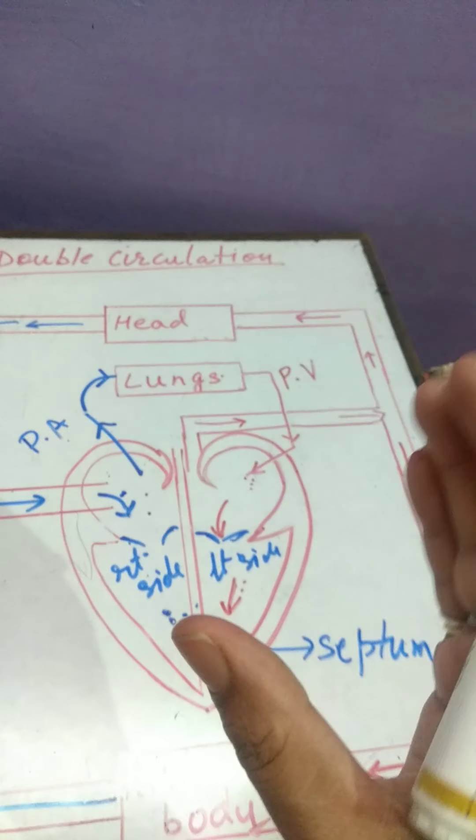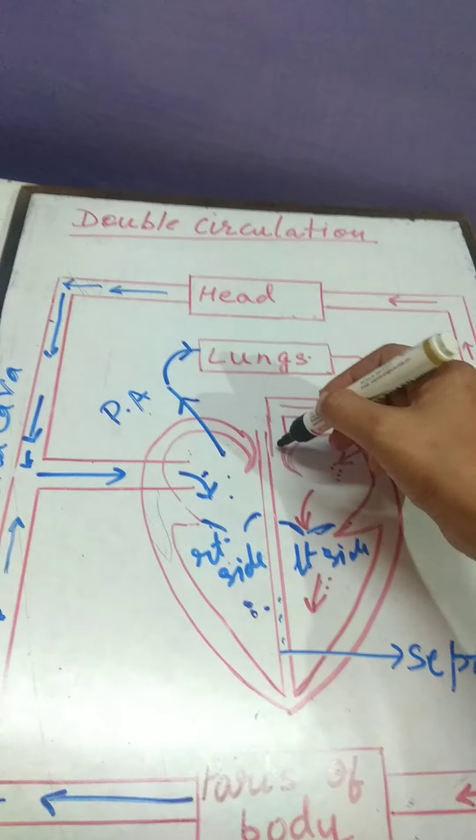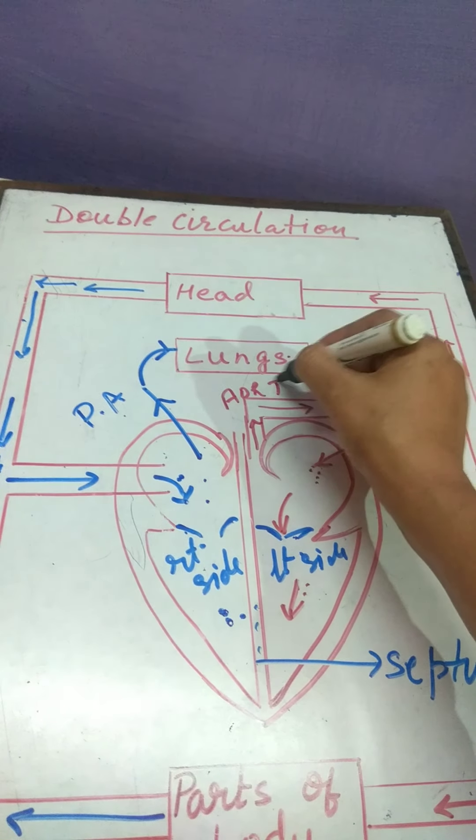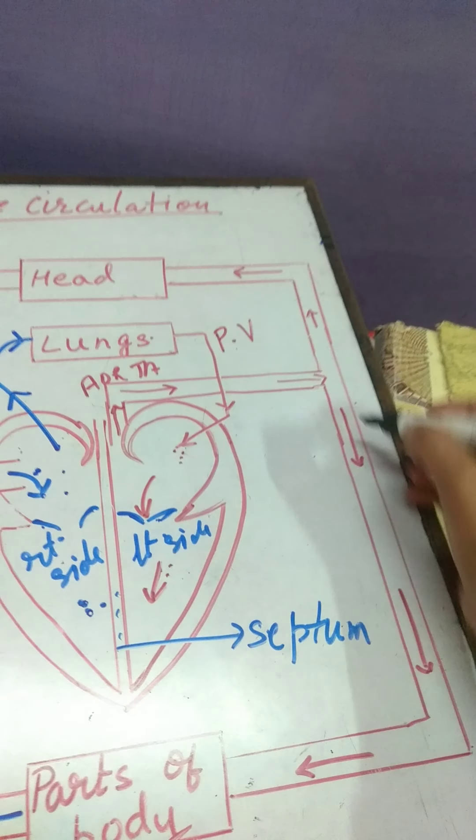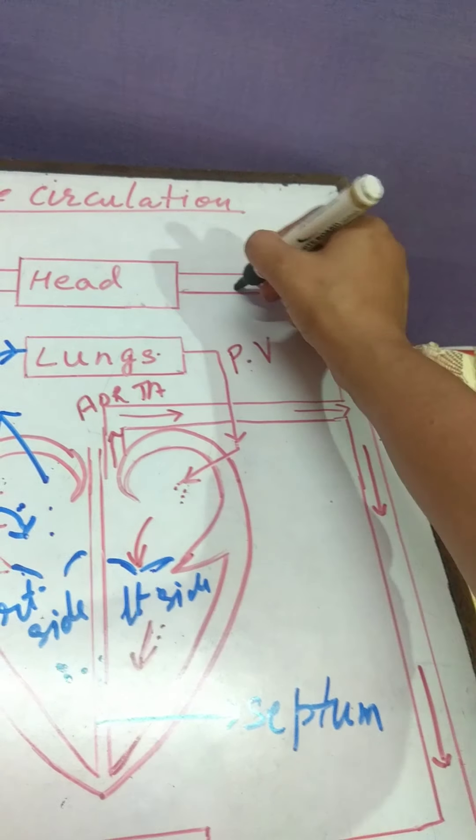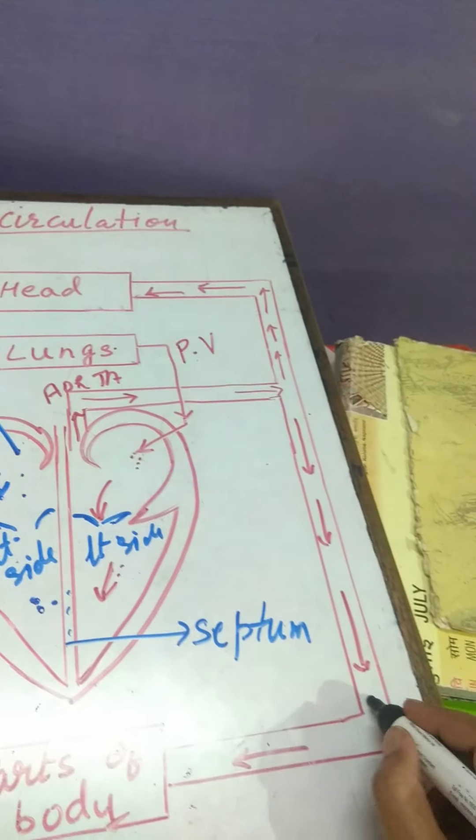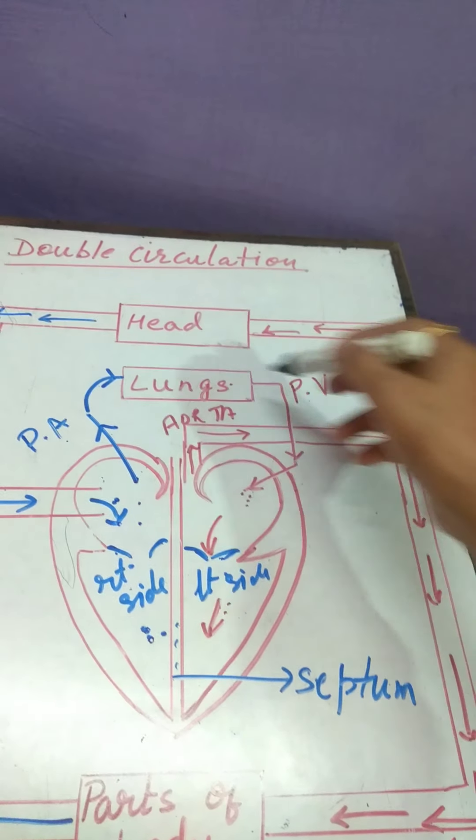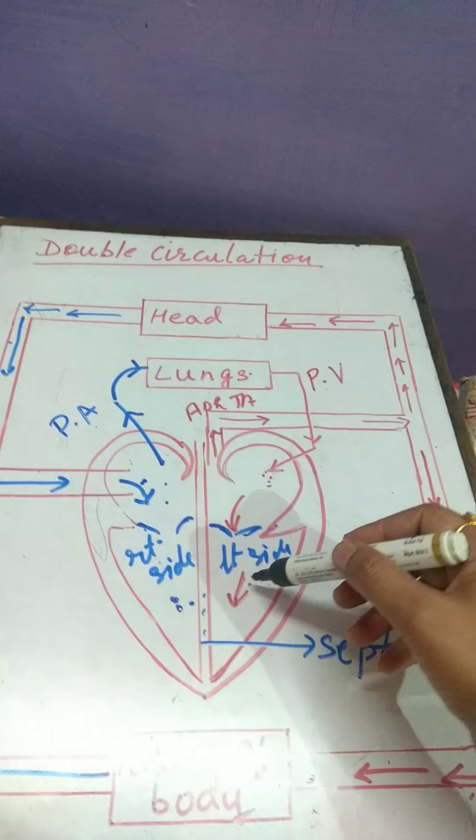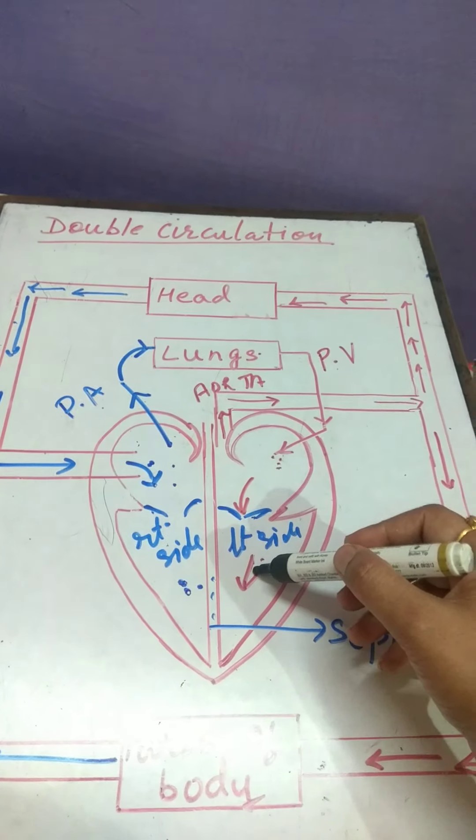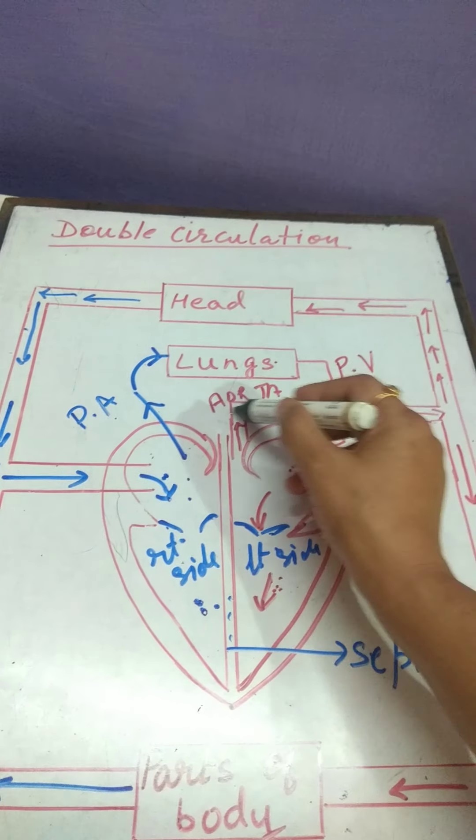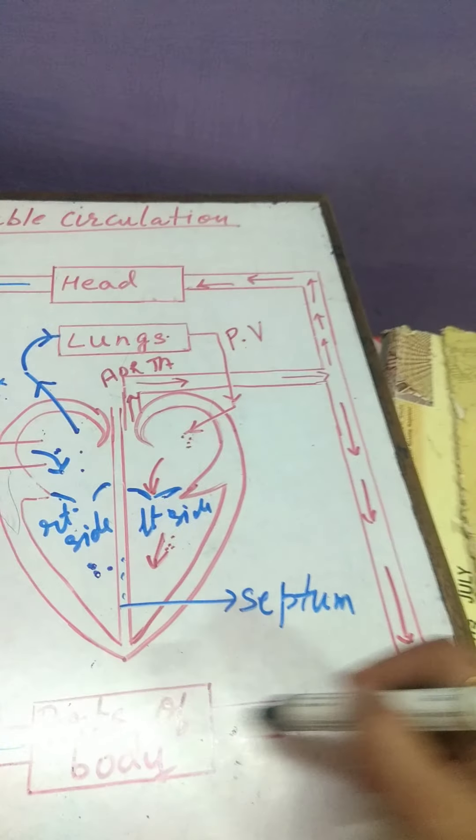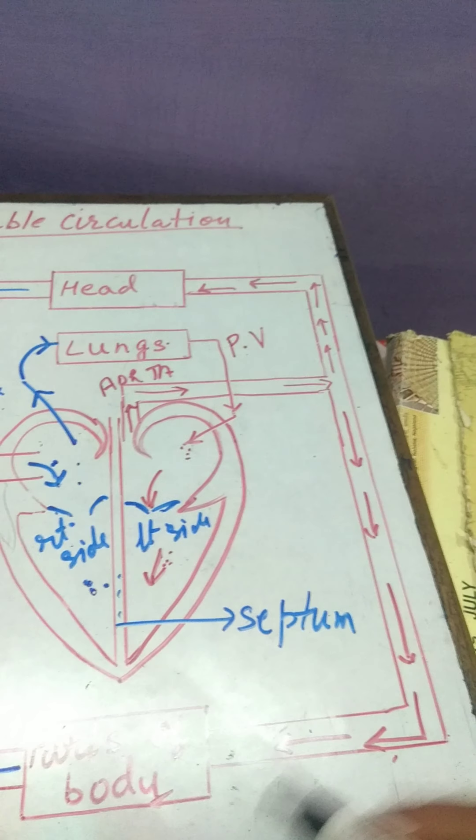And from left ventricle, when it contracts with a high pressure, blood is carried by aorta to different arteries and it is distributed to different parts of the body. So, pure blood enters from lungs through pulmonary vein to the left auricle, then to the left ventricle. From left ventricle, pure blood is carried by aorta to different arteries and these arteries carry pure blood to different parts of the body.